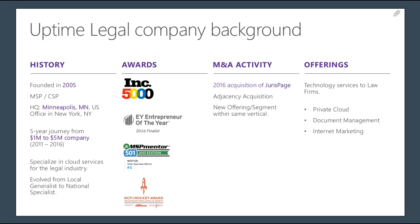Today, Uptime Legal specializes in cloud services for the legal industry. Along the way, we've won some awards I'm proud of — we just found out we made the Inc. 5000 list of fastest-growing private companies in America for the fourth consecutive year, which gets harder every year because it's measured in velocity and percentage growth over three years. Other awards include the Ernst & Young Entrepreneur of the Year finalist, the MSP Mentor number one in the 501 back in 2015, and the RCP Rocket Award which recognizes excellence and growth.